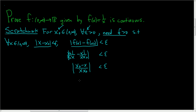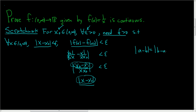We can rearrange this as |x minus x naught|, because the distance between x naught and x equals the distance between x and x naught — the absolute value of a minus b equals the absolute value of b minus a. We can drop the absolute values in the denominator because both values are positive numbers living inside this interval. The problem is we want this to be less than epsilon, but there is an x in the denominator, so we need to figure out how to bound 1 over x.